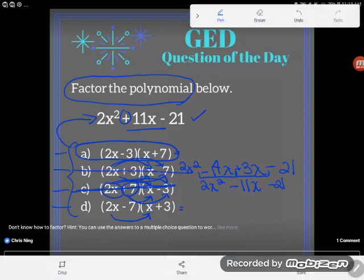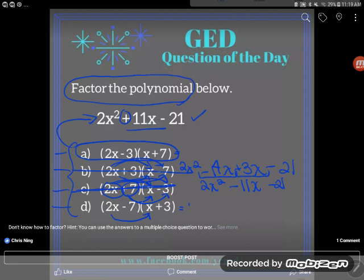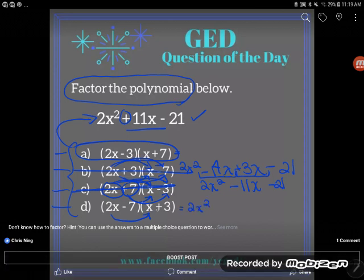And let's just check out D. 2x times x is 2x squared. 2x times positive 3 is positive 6x.